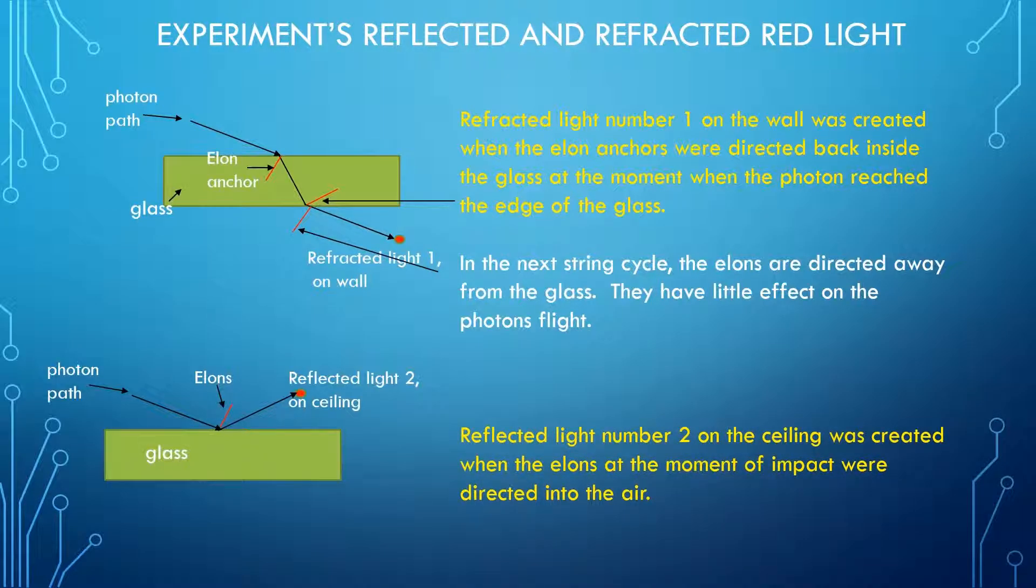Now, the reflected light number two on the ceiling was created when the elons at the moment of impact were directed into the air, and this allowed the photon to glance off the surface of the glass. This leaves us with the diffuse light labeled number three that is spread over a large area in front of the pane of glass. This is examined in the next illustration.